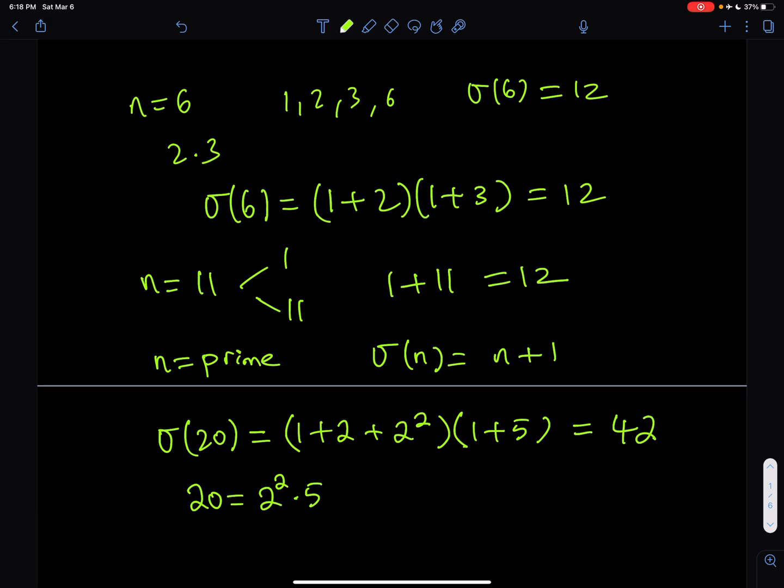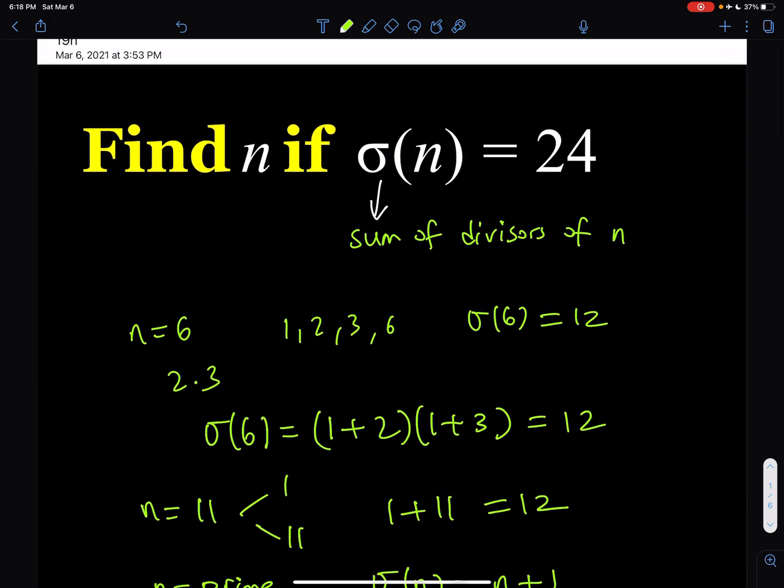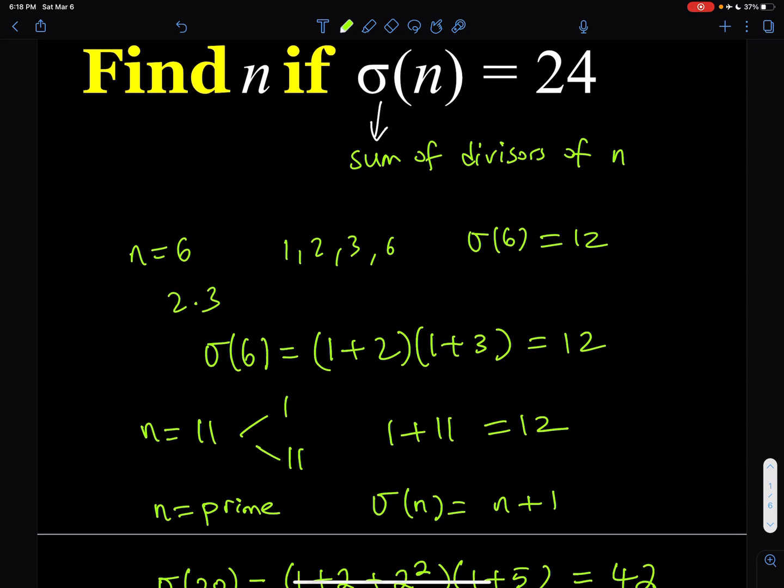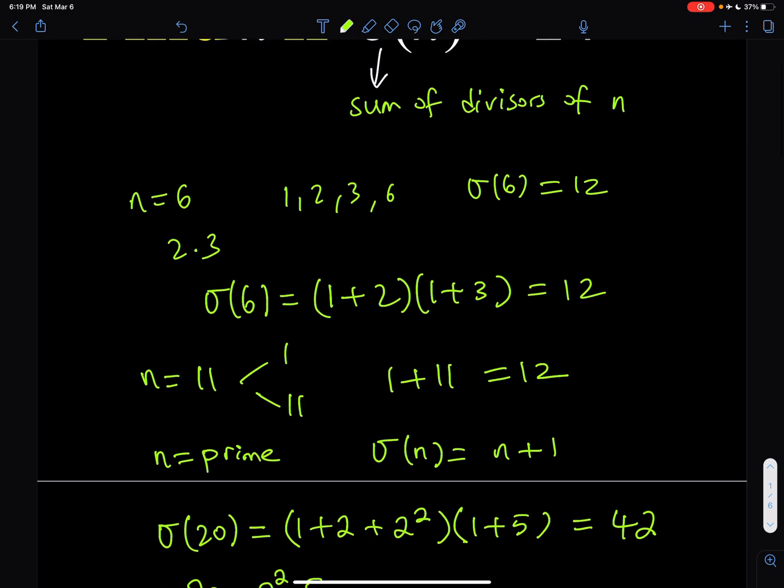Now, having said all this, I know I still gave you a lot of details. I just want to go ahead and proceed. How am I going to find out which numbers will give me the sigma of n equals 24? There is no way to find inverse sigma easily. So here's what I need to think about.